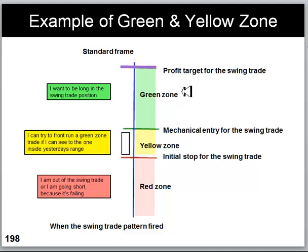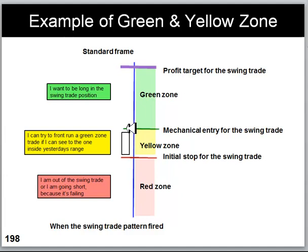I want you to consider our standard frame. We have this vertical blue line which indicates that the swing pattern we're interested in has just fired, and the daily candle at the close looks something like this. What we're interested in is setting up a mechanical frame that gives us a favorable swing trade if everything goes according to plan. The way we basically do that is we take yesterday's candle and we place a mechanical entry for the swing trade at the green line.